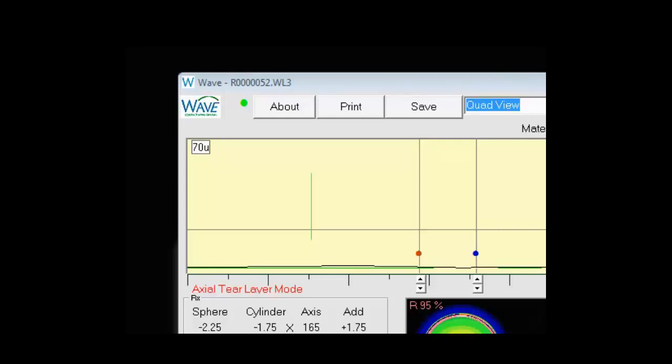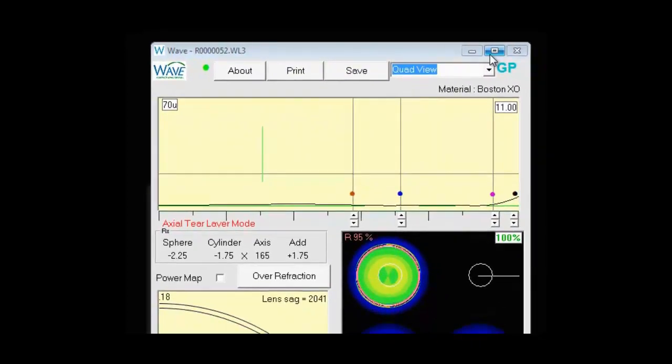As we move over, we have the minimize screen, which will minimize the WAVE display. We have the maximize, which will make it big, and this will toggle it between this larger display and the smaller WAVE display. And, of course, the X will close the program.